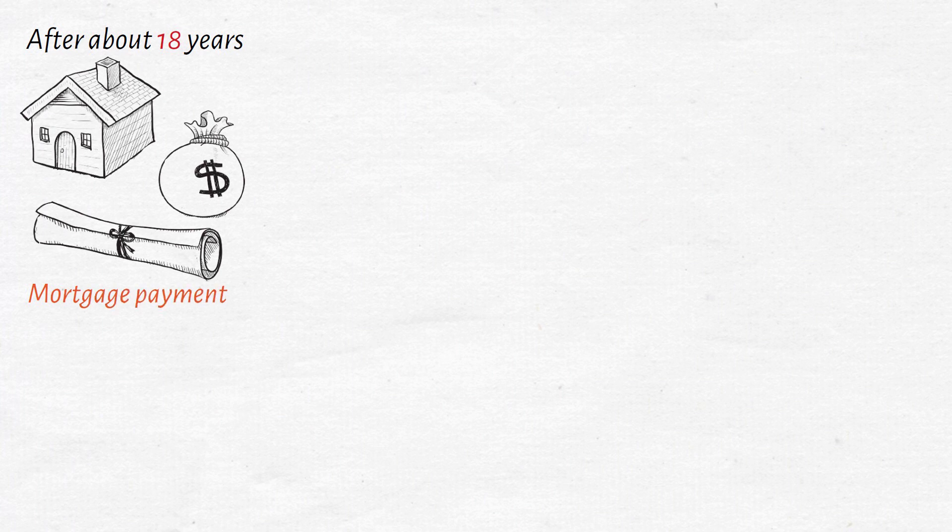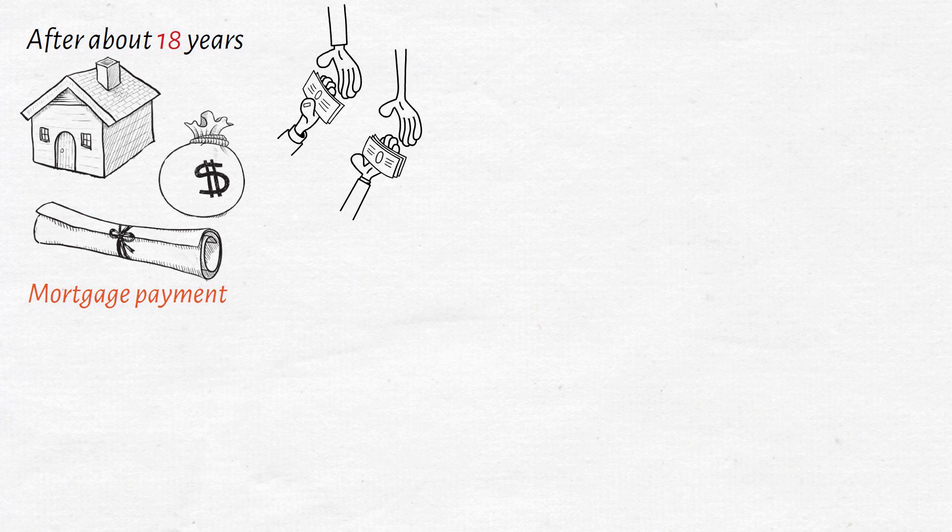Simply put, after about 18 years, your mortgage payment is only half as much as it was when you took it out, and you're paying back debt with a dollar that is worth less than it was previously.